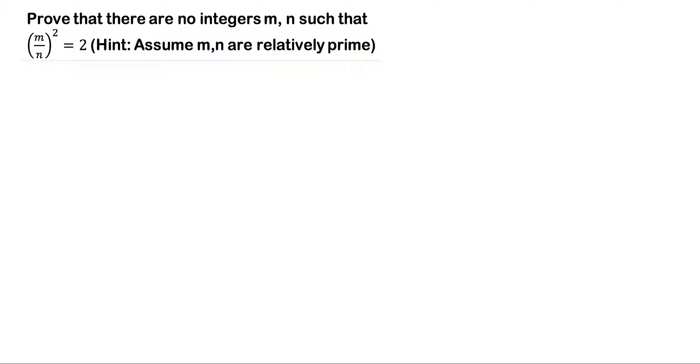But before we get started, I just want to note: assume that m and n are relatively prime. So all this means is that the GCD of m and n is 1.